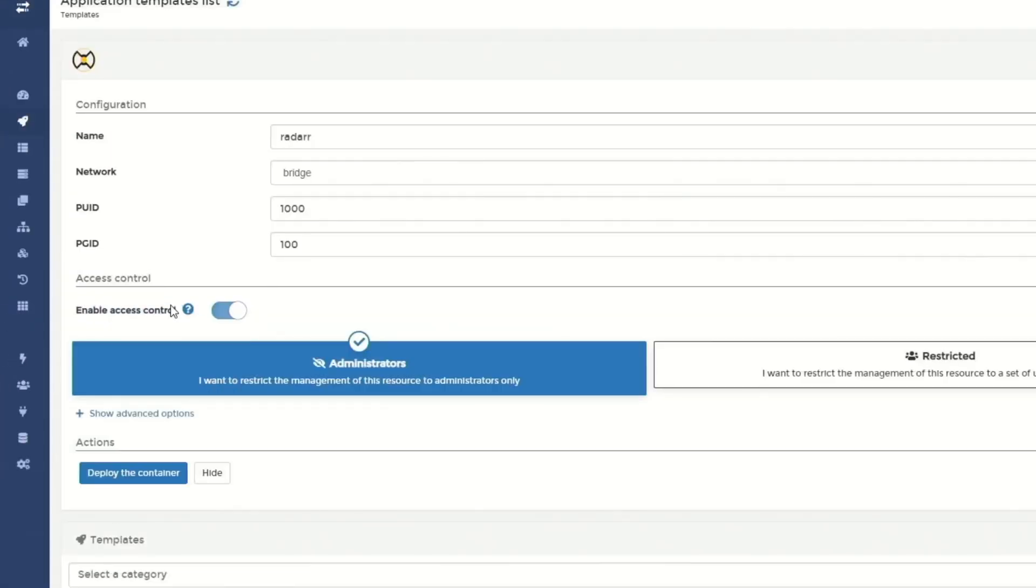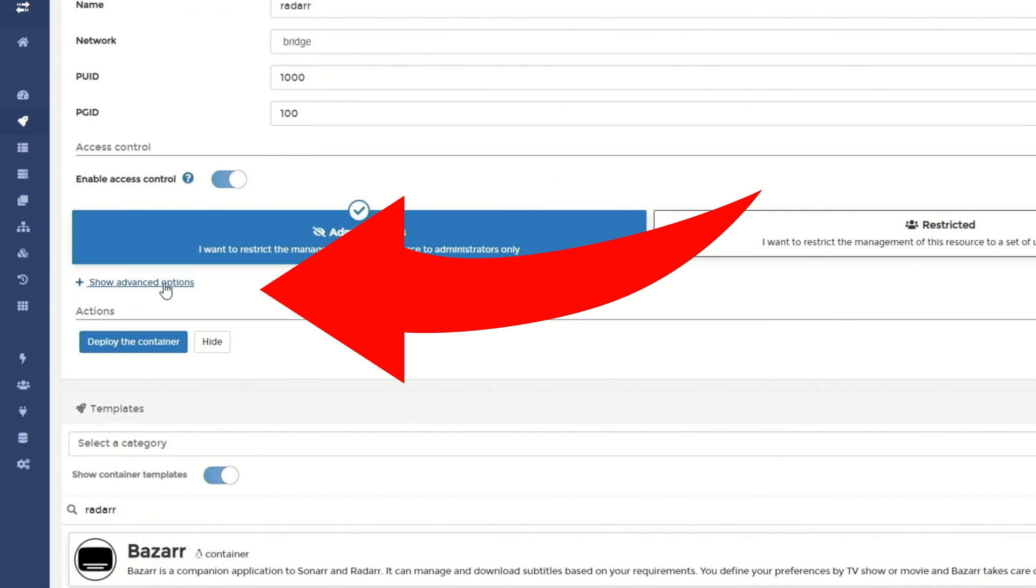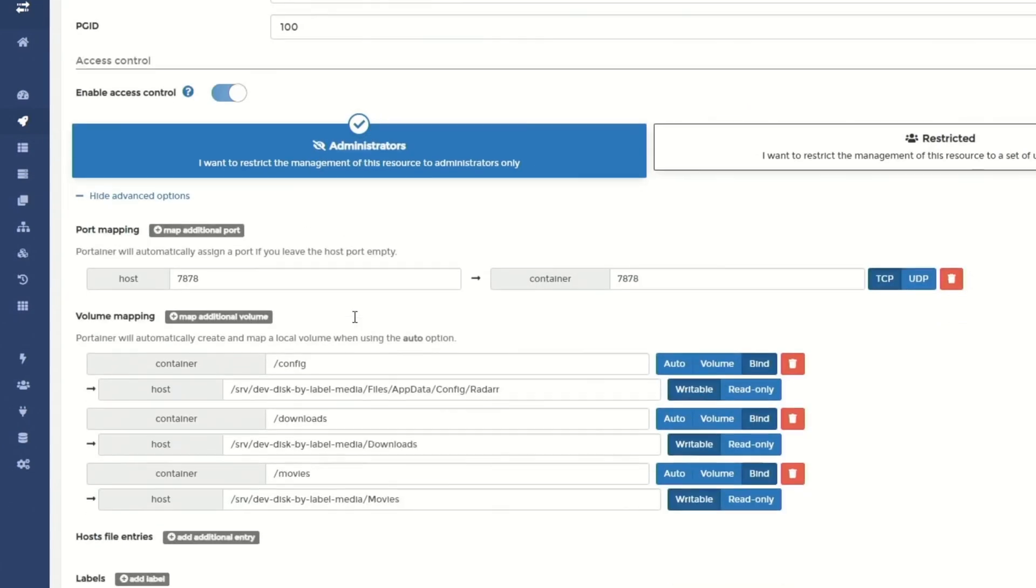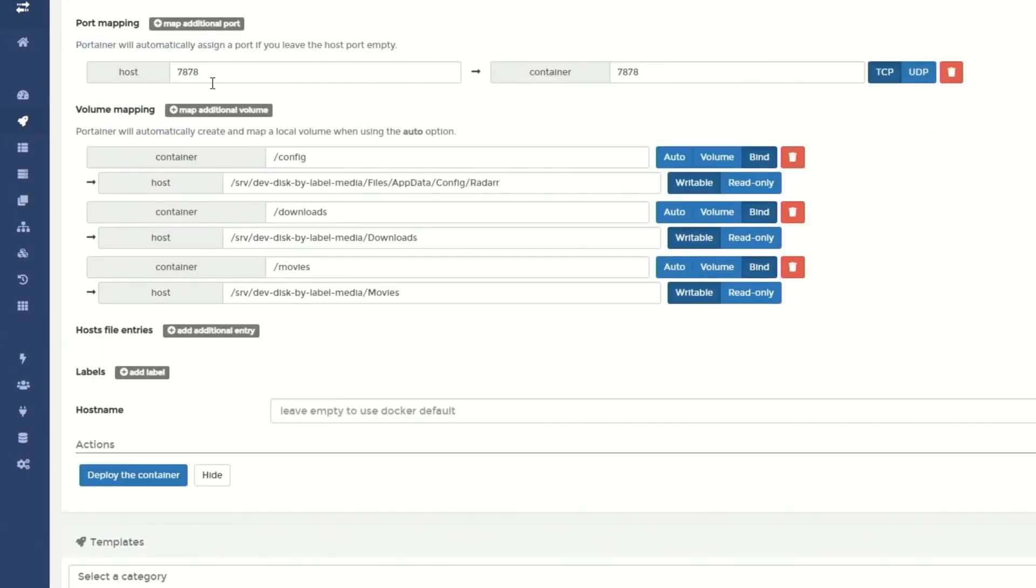We're going to type in Radar in the search bar. Click on Radar. And so to install this, we're going to show Advanced. We're going to leave the port as is.